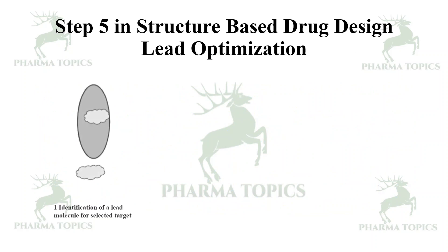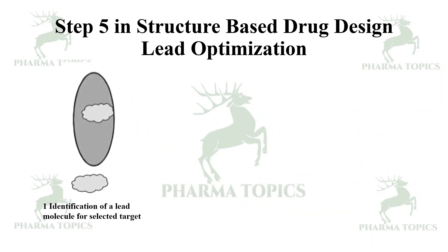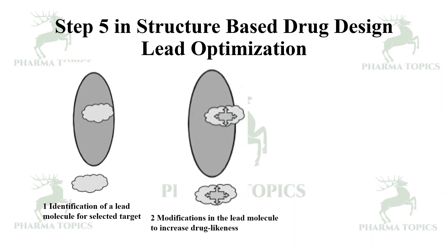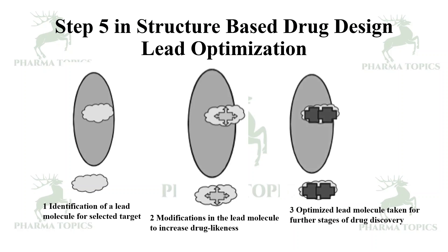Step 5 is lead optimization: identify the lead molecule for the selected target, modify the lead — that is, optimize the lead — to increase its drug-likeness, so the optimized lead molecule can be taken for further stages of drug discovery.